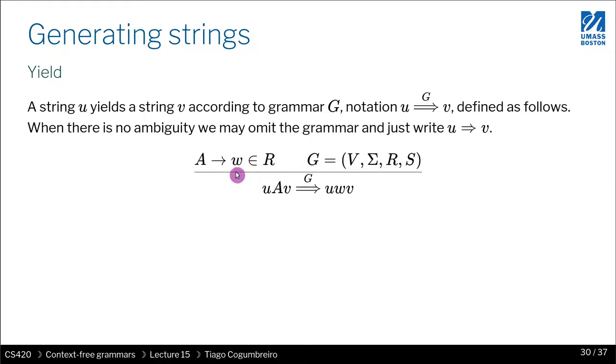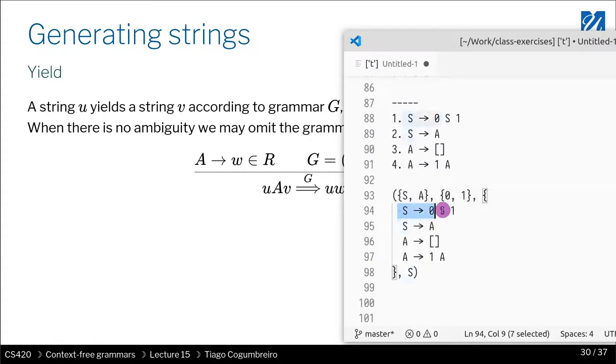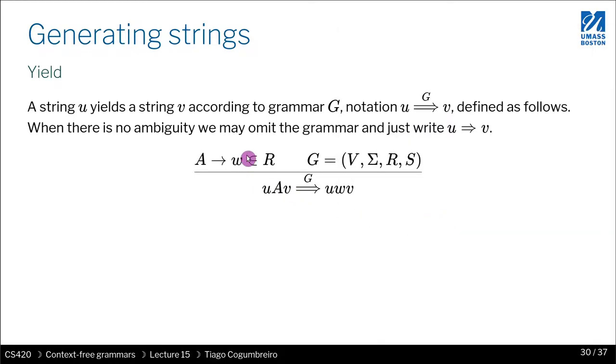Again, recall that could be something like this. If that belongs to R and G is specified, the grammar is specified as this, then the output would be replacing A by w. You simply replace it, and you have u and v surrounding it as before.